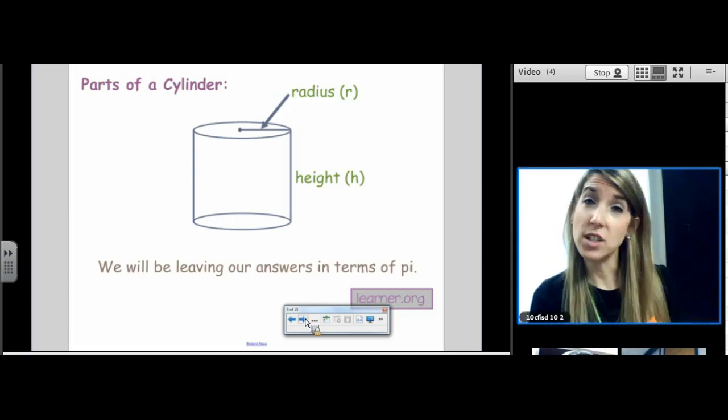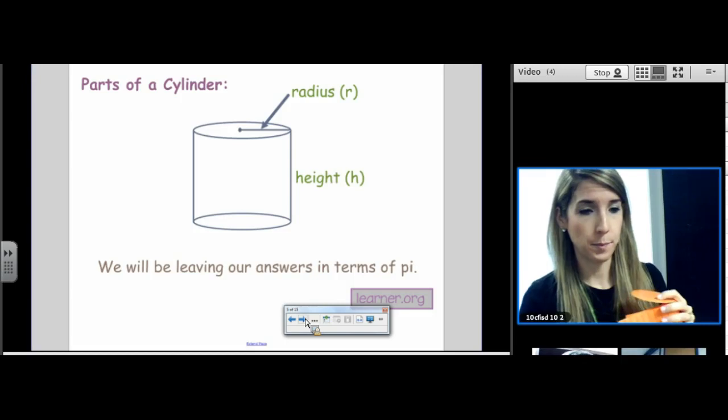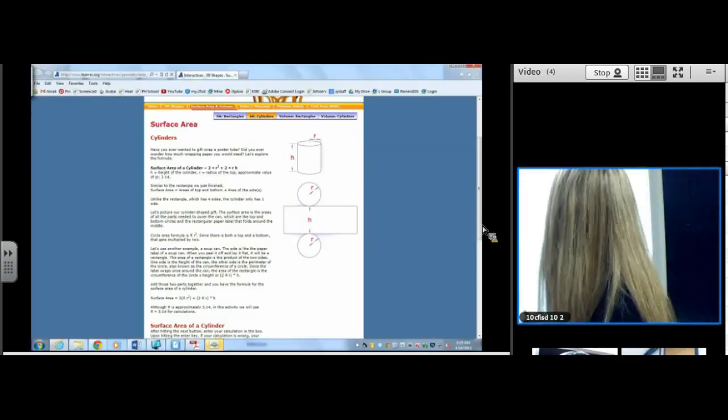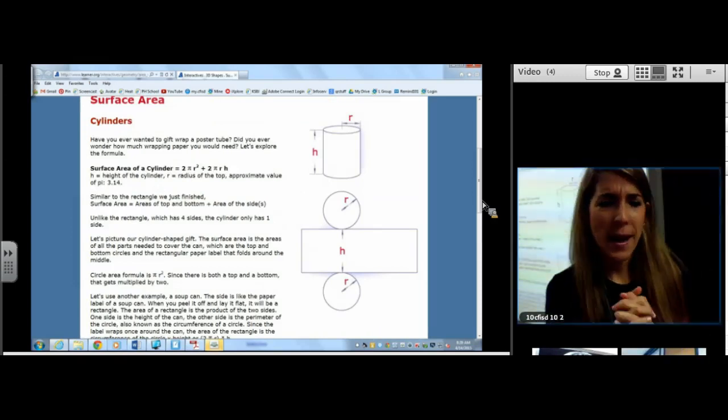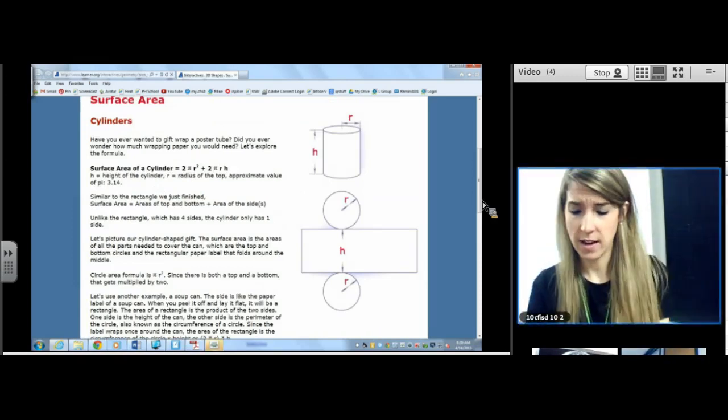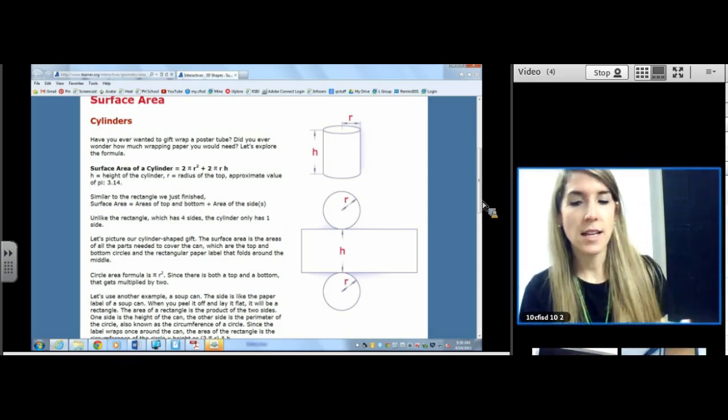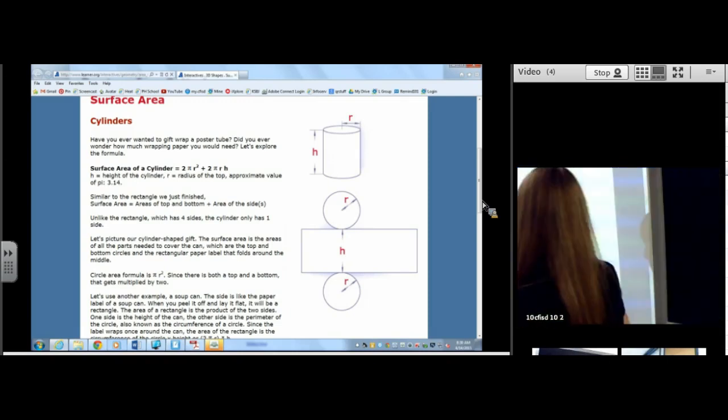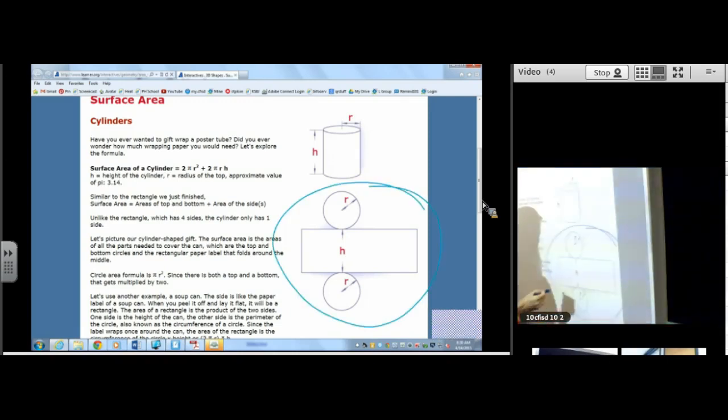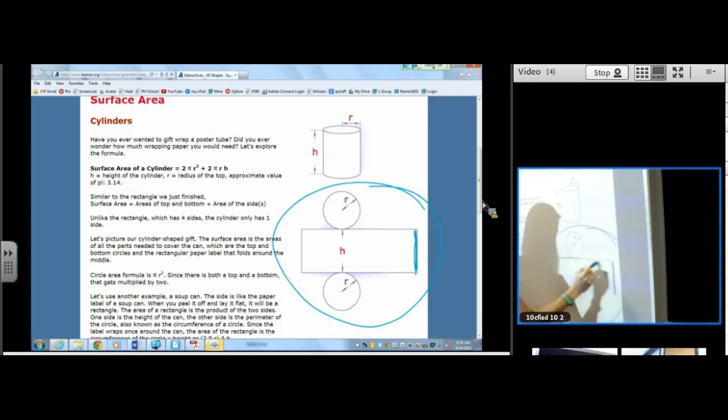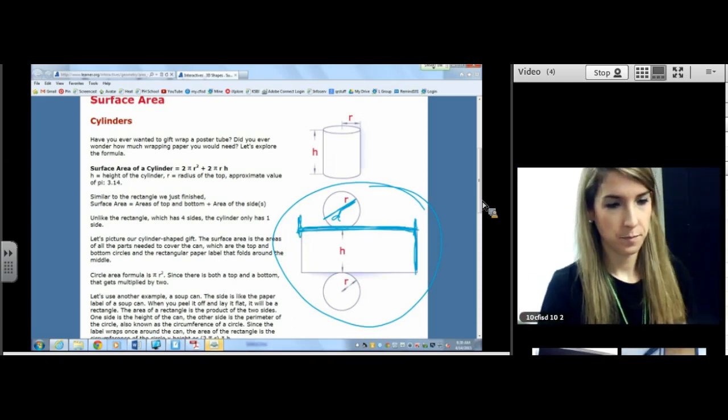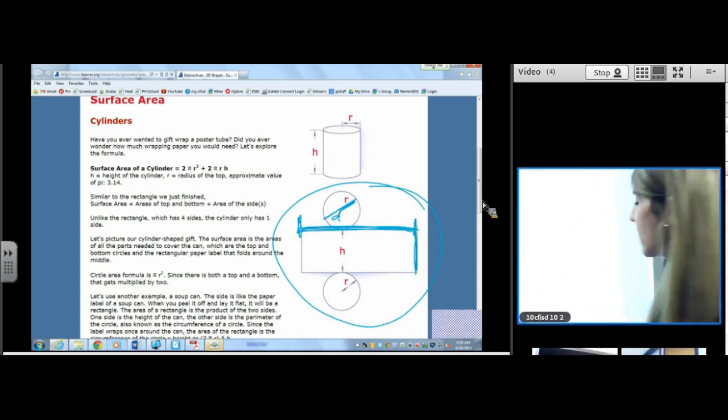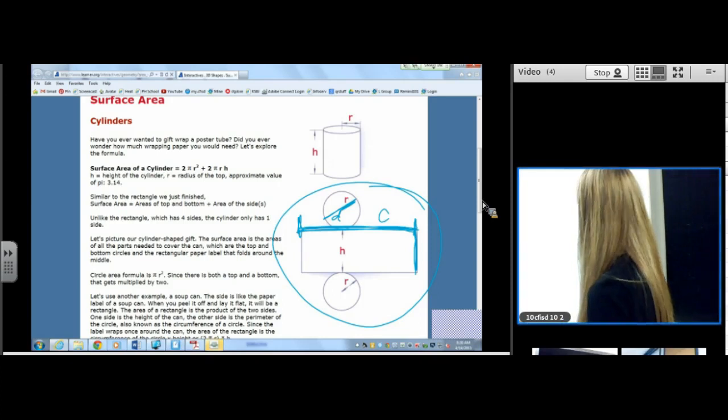We're of course going to leave our answers in terms of π unless it's a real world story problem. So I'm showing you a clip real quick of learner.org. The radius and the height are really easy to find when the cylinder is a solid. They're not as easy to identify when you're looking at the net. So here's the net of our cylinder. This one is the height, not this one. Here's our radius. Of course, this would be our diameter. And what would this represent right here? What would that length be right there? Yeah, Ganesh. Very good. That would be the circumference. That right there is the circumference.